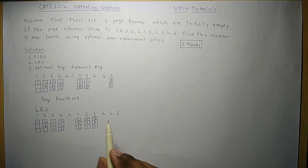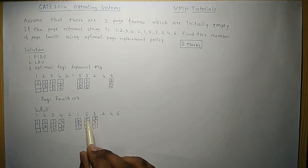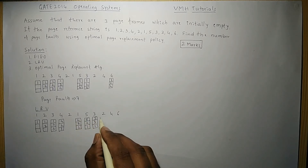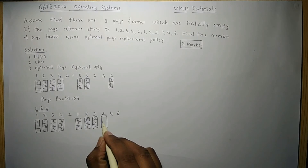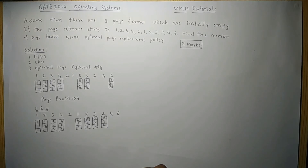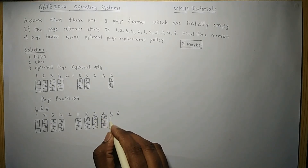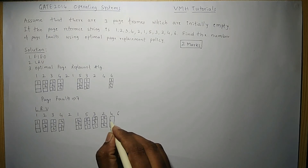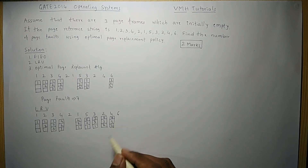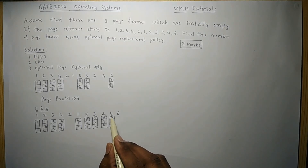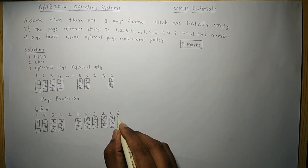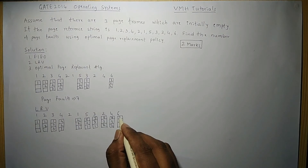The next reference is for page 2, which is not available — page fault. Pages 3 and 5 were used most recently; page 1 was least recently used. So page 1 is replaced with page 2. Wait — actually page 5 is replaced, giving frames 3, 2 and continuing. The next reference is for page 4: pages 2 and 4 used, then page 3 was least recent, so page 3 is replaced with page 6.